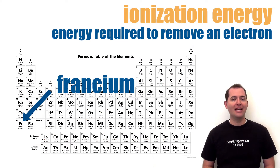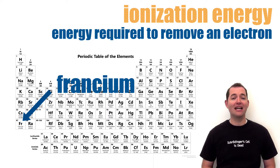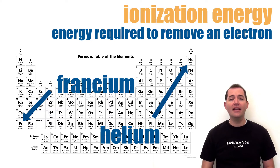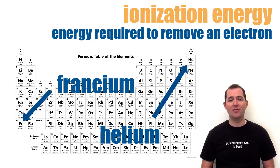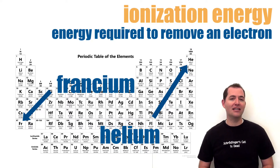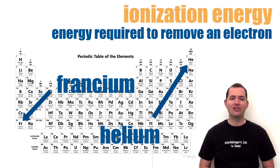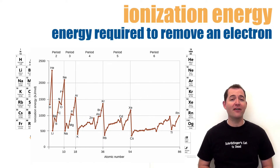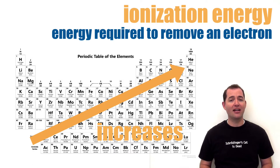Francium is a good example: it is very easy to remove an electron from francium because it has a single valence electron that is far away from the nucleus. Helium is a good counter-example — it is very difficult to remove an electron from helium because its electrons are close to the nucleus and it has a full electron shell. There are a few variations from this trend, but the pattern generally holds true.